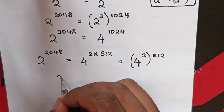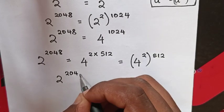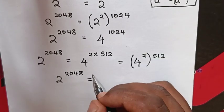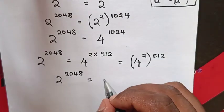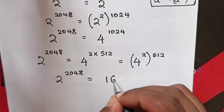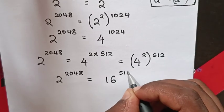This 2^2048 equals 4 squared, which is 16^512.